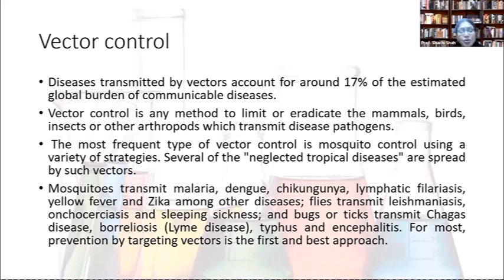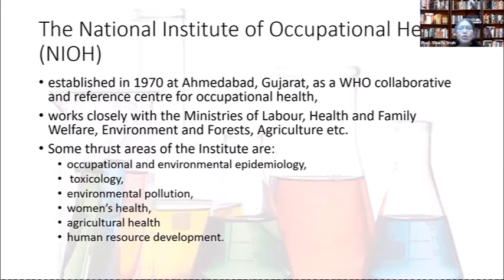Mosquitoes are vectors that transmit malaria, dengue, chikungunya, lymphatic filariasis, yellow fever, and Zika fever among other diseases. The National Institute of Occupational Health (NIOH) was established in 1978 in Ahmedabad, Gujarat, in collaboration with WHO. Its thrust areas include occupational and environmental epidemiology, toxicology, environmental pollution, women's health, agriculture health, and human resource development, and it works closely with the ministries of labor, health, environment, and agriculture.